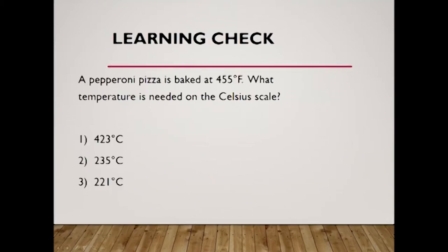The next one: you're a foreigner in the United States, like I am. It took me a while to learn how to convert Celsius to Fahrenheit. When you bake a pepperoni pizza at 455 Fahrenheit, what temperature does it need to be in Celsius? Because now you're in a foreign country and the oven is in Celsius. Option 1: 423. Option 2: 235. Option 3: 221.